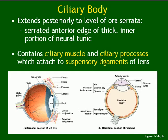The ciliary body contains ciliary muscles, ciliary processes, and suspensory ligaments. The suspensory ligaments are attached to the lens. If the ciliary muscles constrict, the lens shape changes one way; if they relax, it changes the other way. This changes the refraction of the lens.